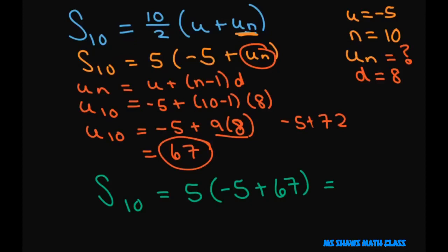So that's 5 times 62, which gives you 310. And that's your final answer.